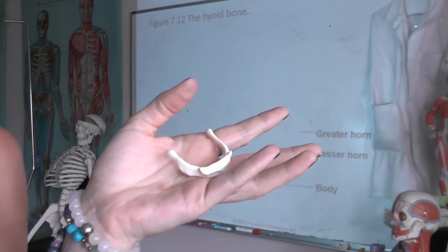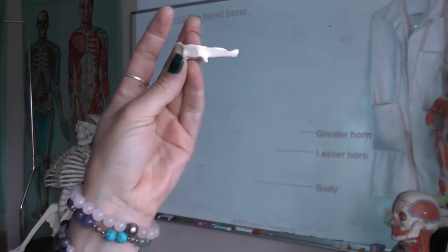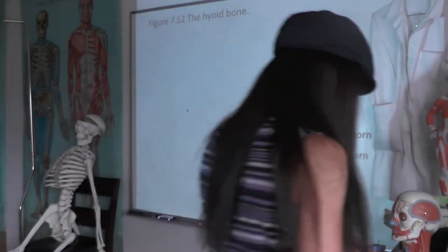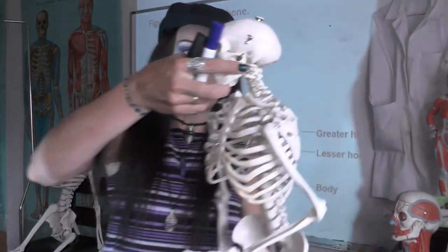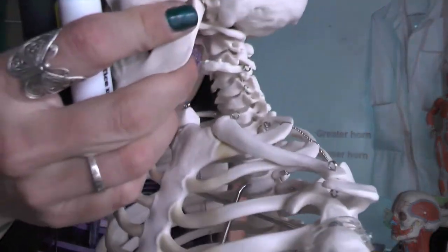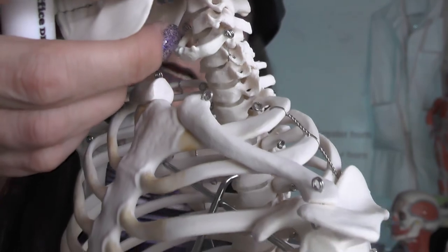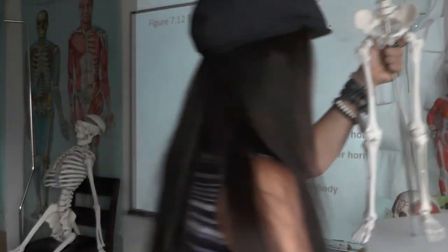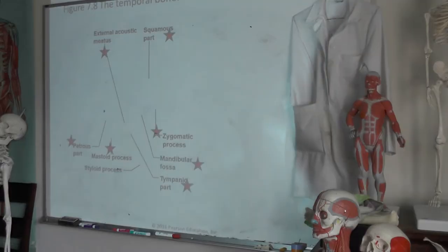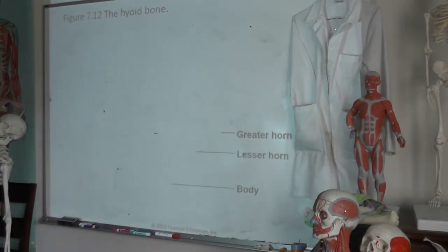Hyoid bone. The hyoid bone is a little weird. If you were to walk up to the lab skeleton in your living room and see this bone sitting there and I were to ask you what it is — that's a hyoid bone. This is the only bone that doesn't articulate with any other bone in your body directly. It sits here on the anterior aspect of your throat and protects your trachea here.